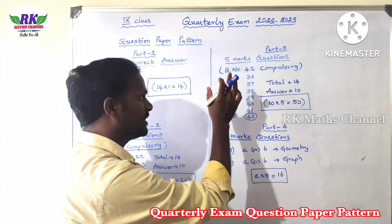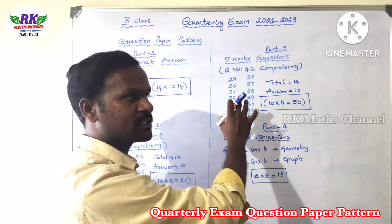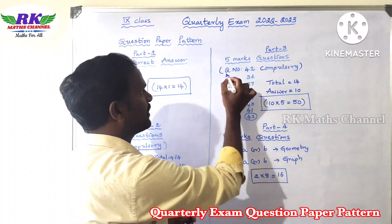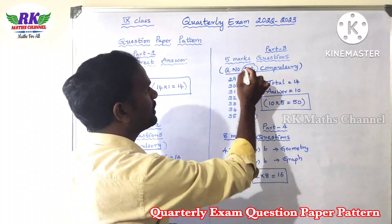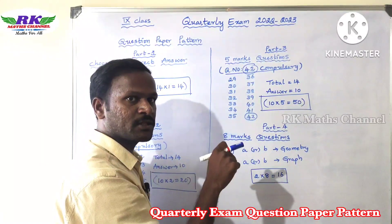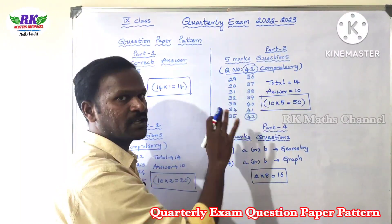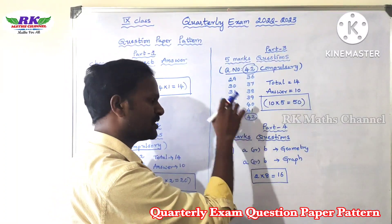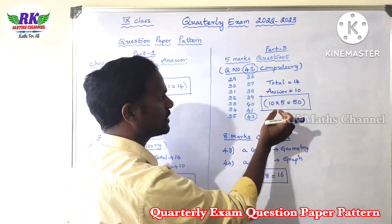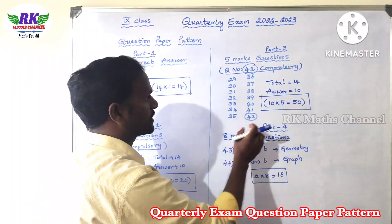Part 3 is 5 marks. There are 14 questions, from question number 29 to 42. Question number 42 is compulsory. From the remaining 13 questions, you answer 9 questions, so in total you attempt 10 questions. 10 questions at 5 marks each gives 50 marks. This is Part 3.